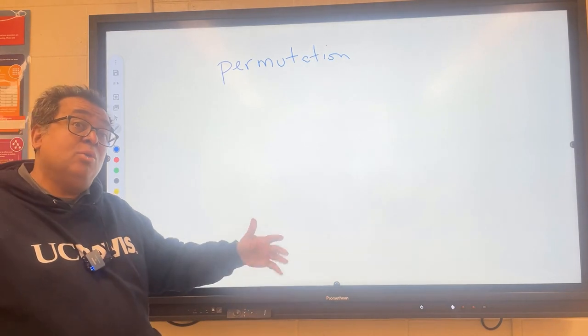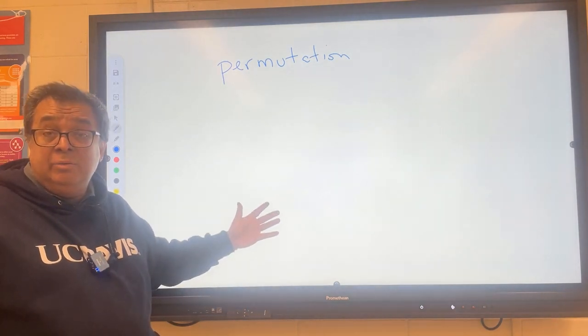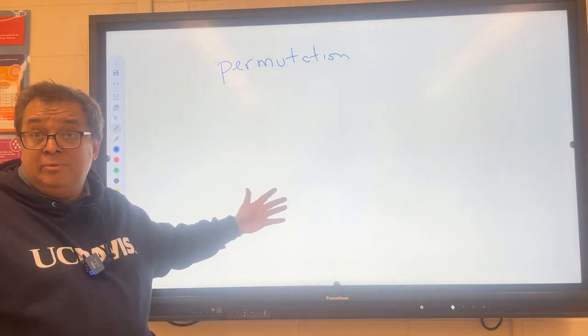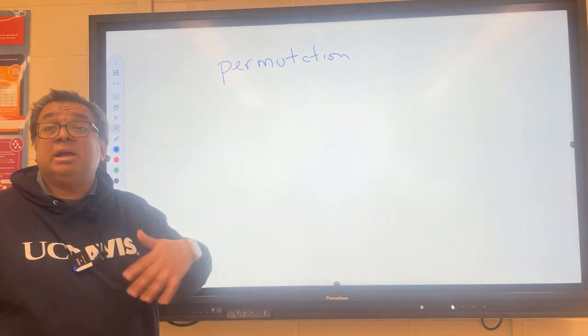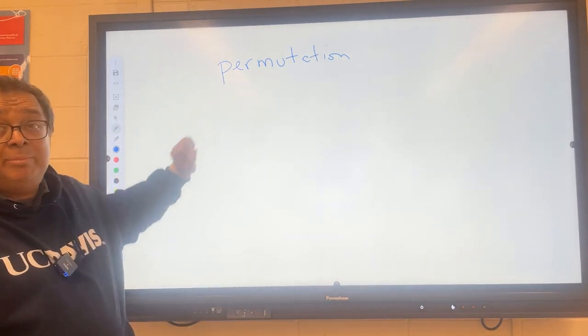So if the order matters, what we're doing is we're calculating a permutation. If the order does not matter, and I'll go over an example of that later when we're picking a volleyball team, right? The order doesn't matter of the players. We'll go over that in a second. We'll see that's called a combination. But right now we're doing a permutation.